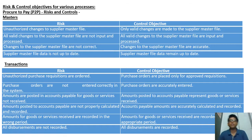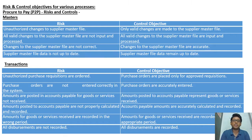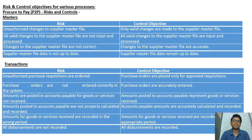Under P2P transactions, the risks and control objectives are: unauthorized purchase requisitions being ordered — control objective: purchase orders placed only for approved requisitions; purchase orders not entered correctly — control objective: accurately entered; amounts posted to accounts payable for goods or services not received — control objective: amounts represent goods/services actually received; amounts not properly calculated — should be accurately recorded; goods/services recorded in the wrong period — should be recorded in the correct period; and all disbursements not recorded — all disbursements should be recorded.